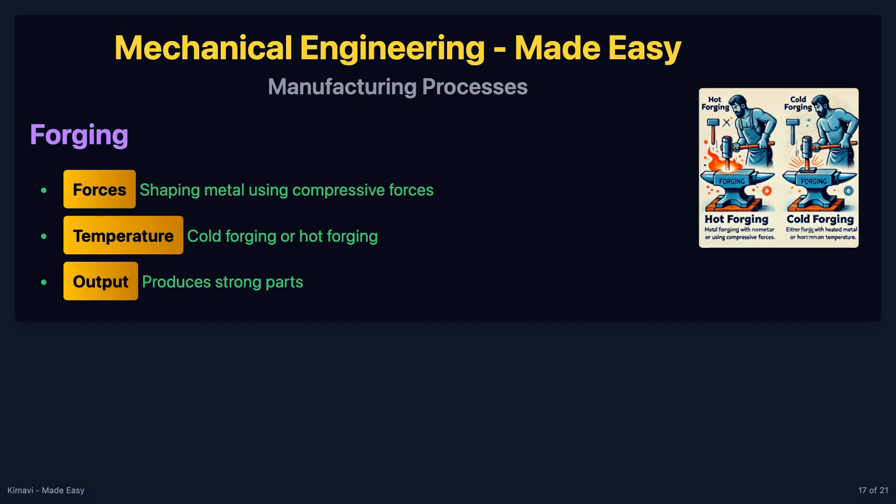Forging involves shaping metal using compressive forces. It can be done at room temperature, known as cold forging, or at elevated temperatures, known as hot forging. Forging produces strong parts.